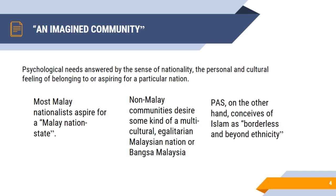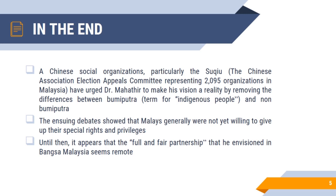Political scientist Benedict Anderson dubbed Malaysia an 'imagined community' — psychological needs answered by the sense of nationality, a personal and cultural feeling of belonging to or aspiring for a particular nation, where citizens will never meet fellow members yet have a sense of unity and a shared goal. However, most Malay nationalists aspire for a Malay nation state, while non-Malay communities desire some kind of multicultural, egalitarian Malaysian nation — Bangsa Malaysia. Religious groups also wanted to establish an Islamic state.